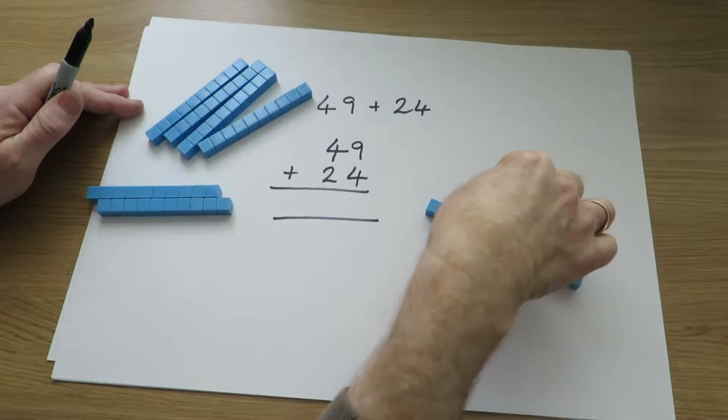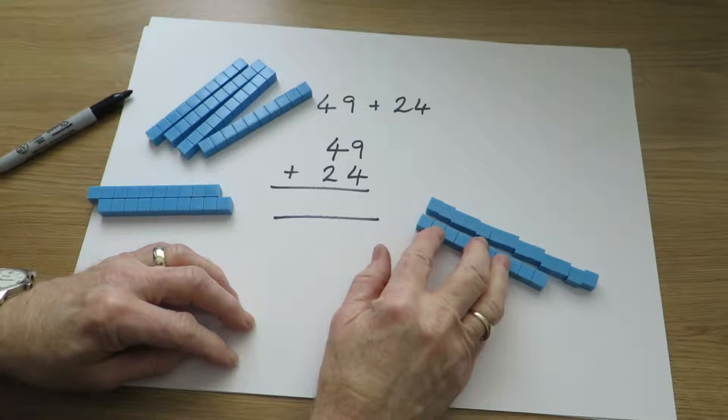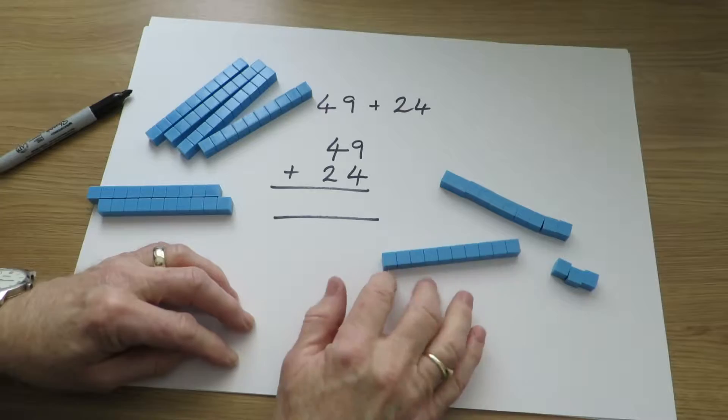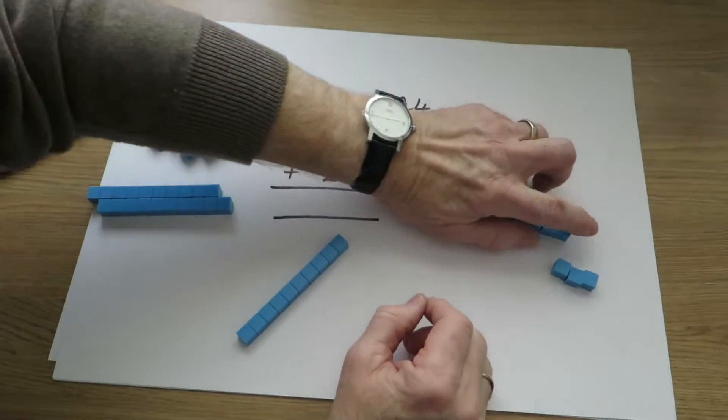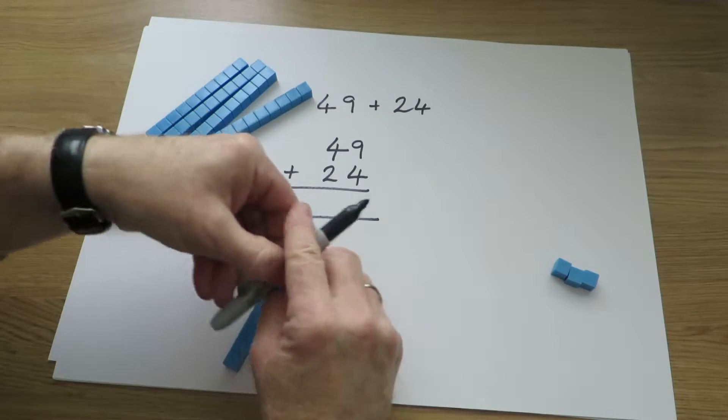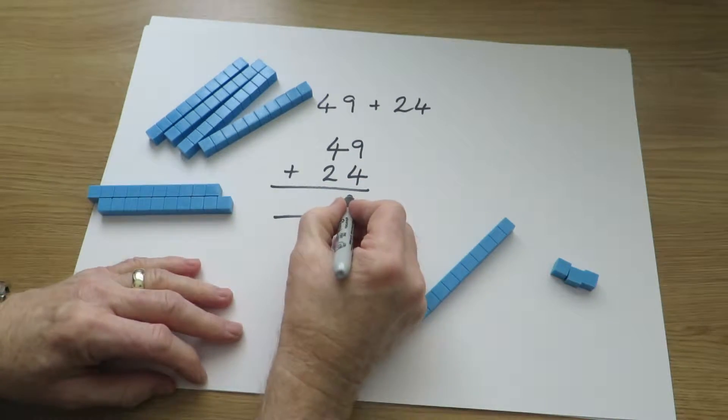Quite helpful to put them in a long line, because we can see then that 10 of those units can simply be swapped for another 10. So those units can go away, because we've replaced them with that 10. So 9 add 4 gives us 13, a 10 and 3 units.